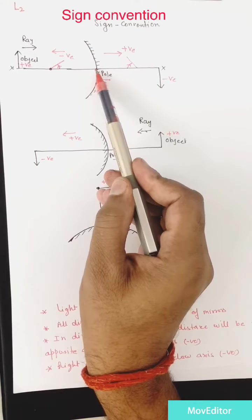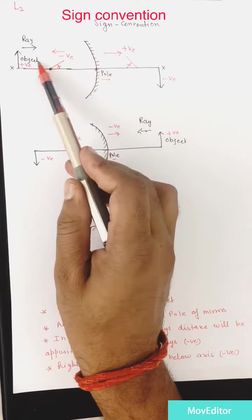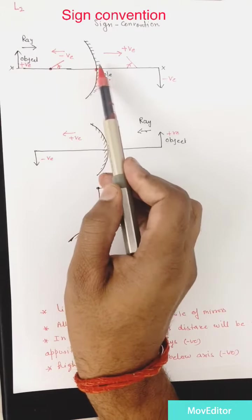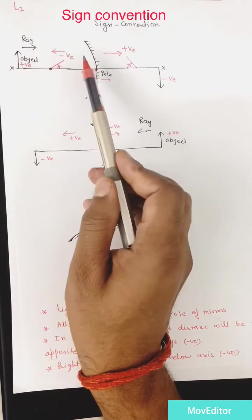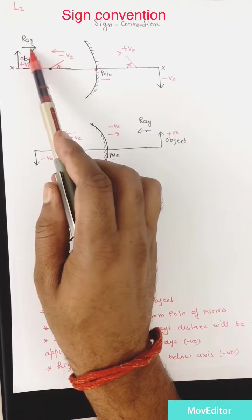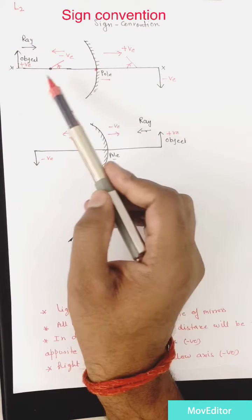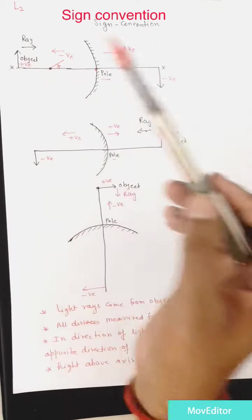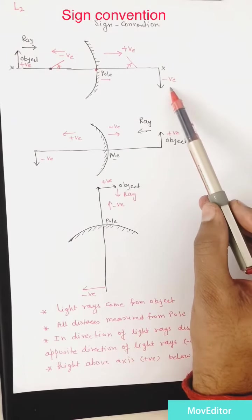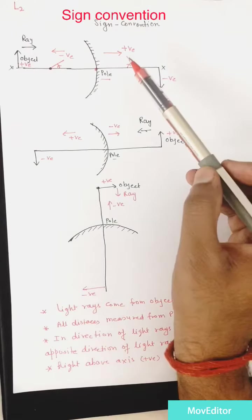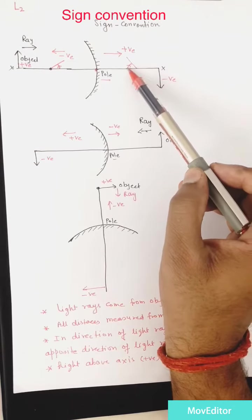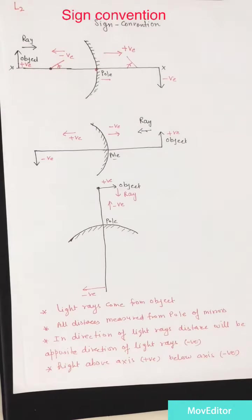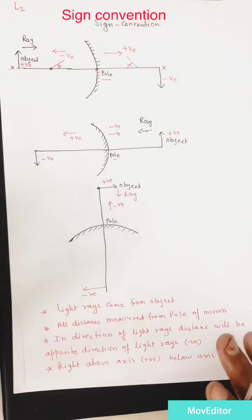While measuring any distance, if you are moving in the opposite direction of the light ray, that distance will be negative. For example, if you want to measure object distance, you are moving in the opposite direction of the light ray, so that distance will be negative. Height above the principal axis is positive; height below the principal axis is negative. Clockwise angle is positive and anticlockwise angle is negative.